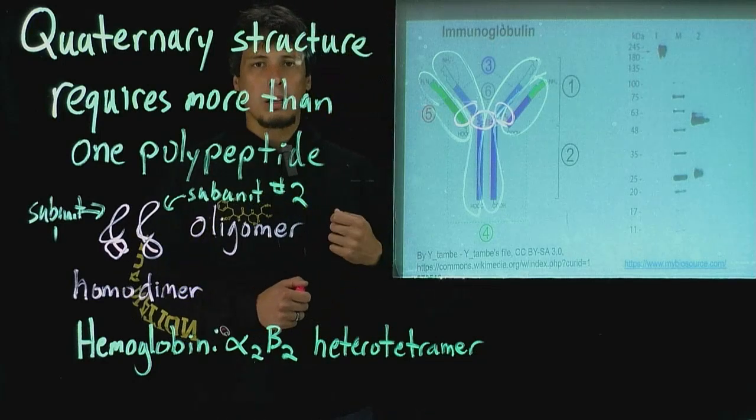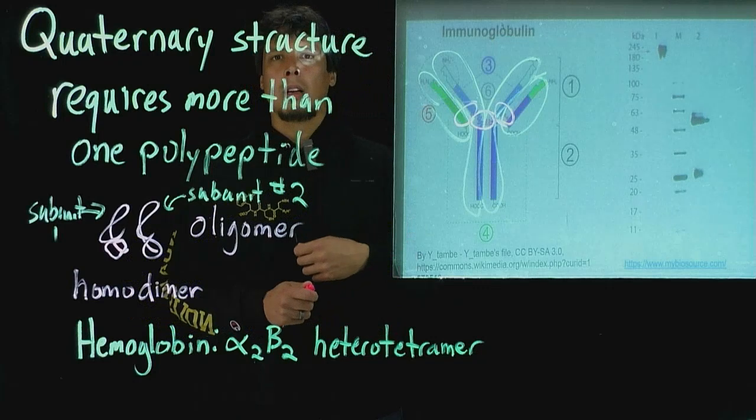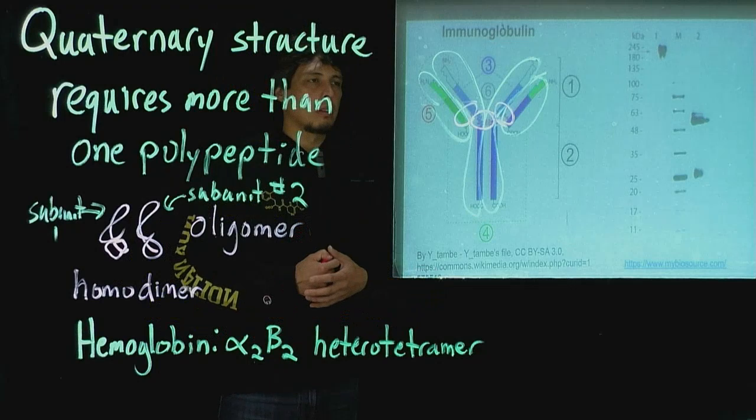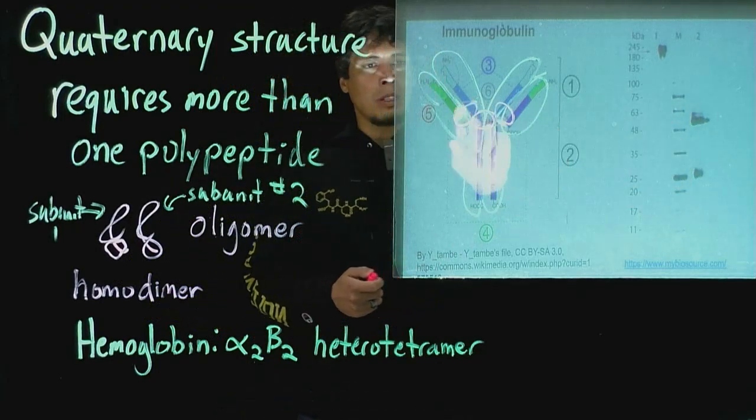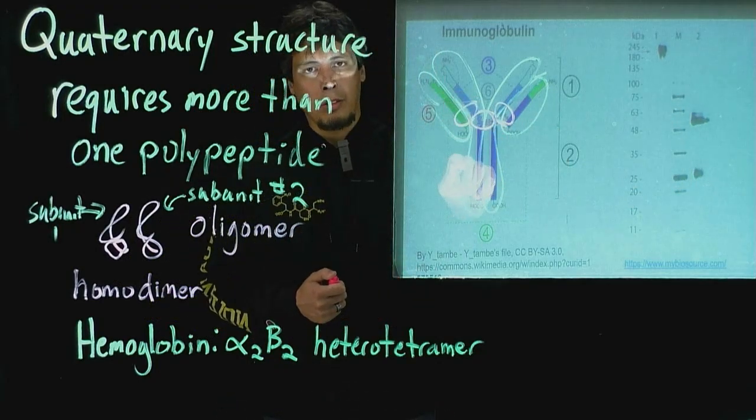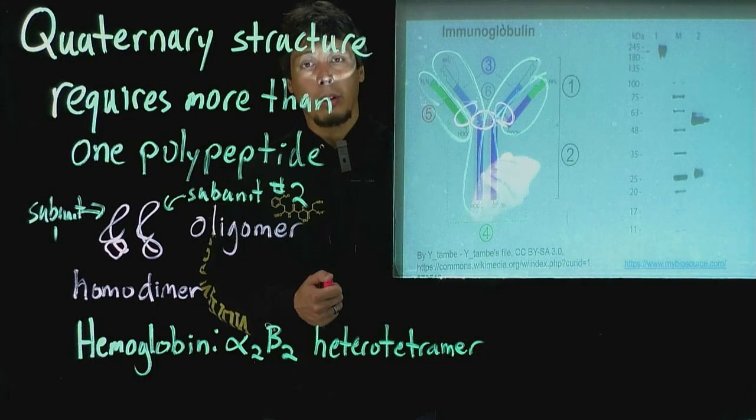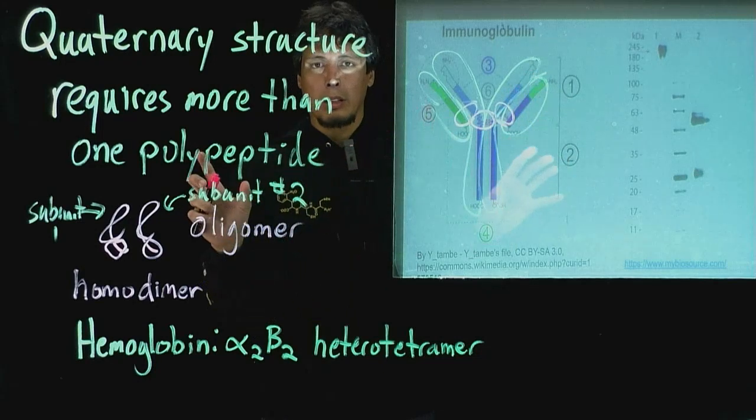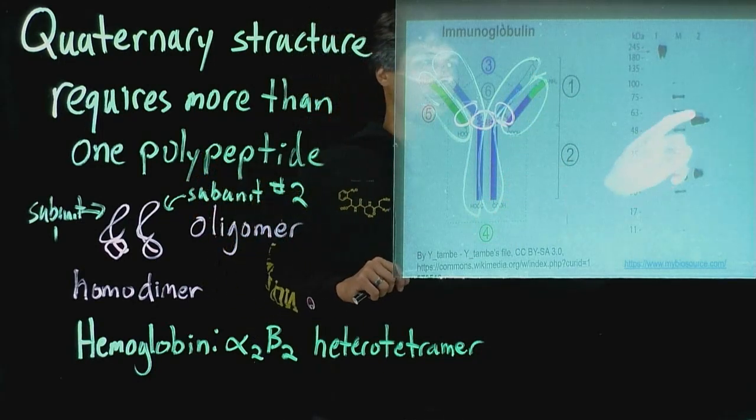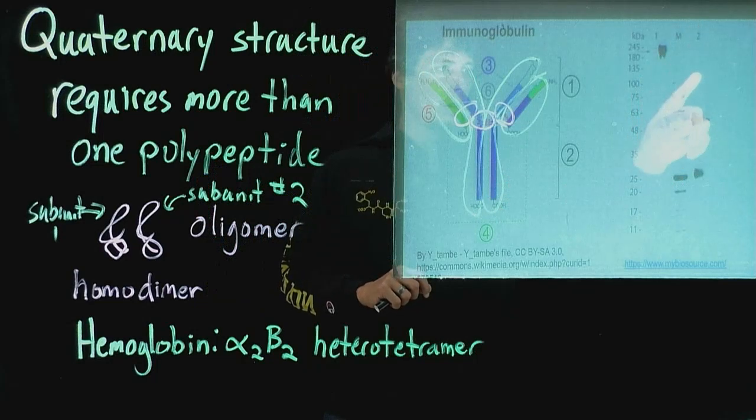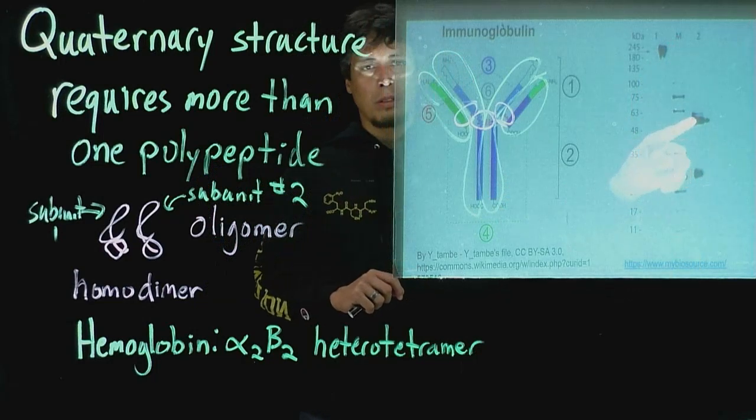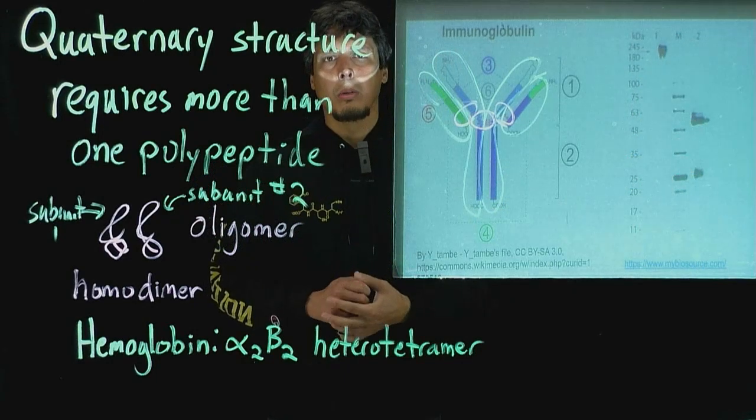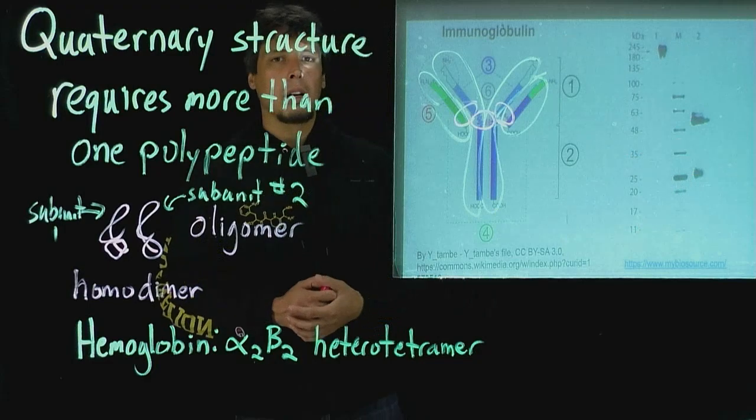But if we add the reductant, such as beta-mercaptoethanol, or TCEP, or DTT, then these can separate. The disulfide bonds can be broken, so break that covalent linkage, and then these subunits can go away from each other. In this lane, in the lane on the far right-hand side, you can see the large chain subunit and the small chain subunits, and they're able to be differentiable on an SDS page gel.